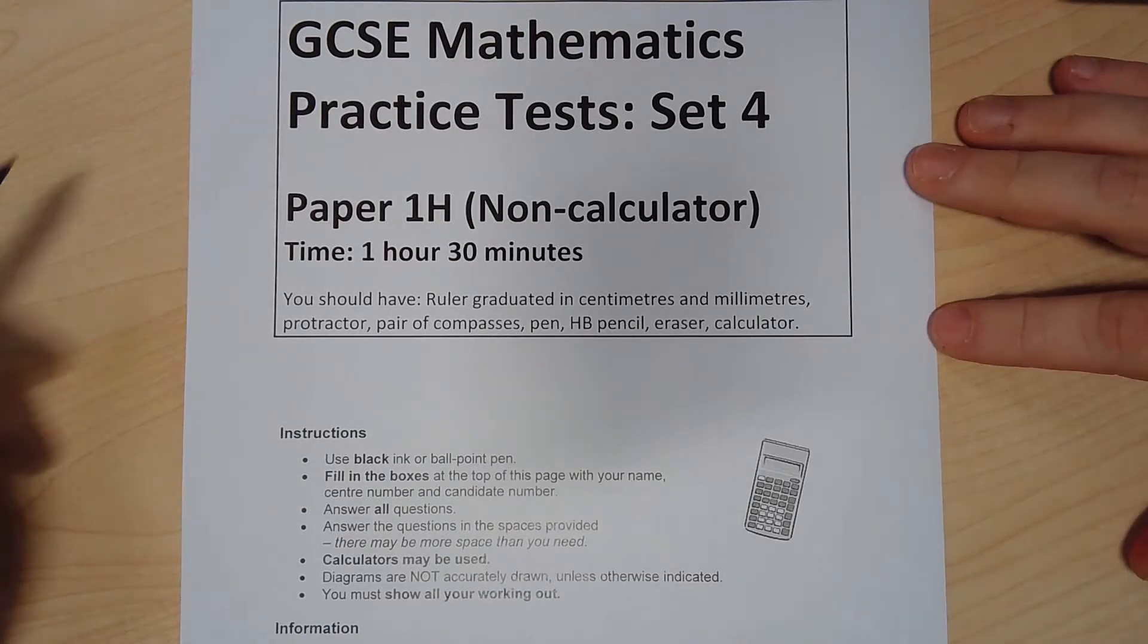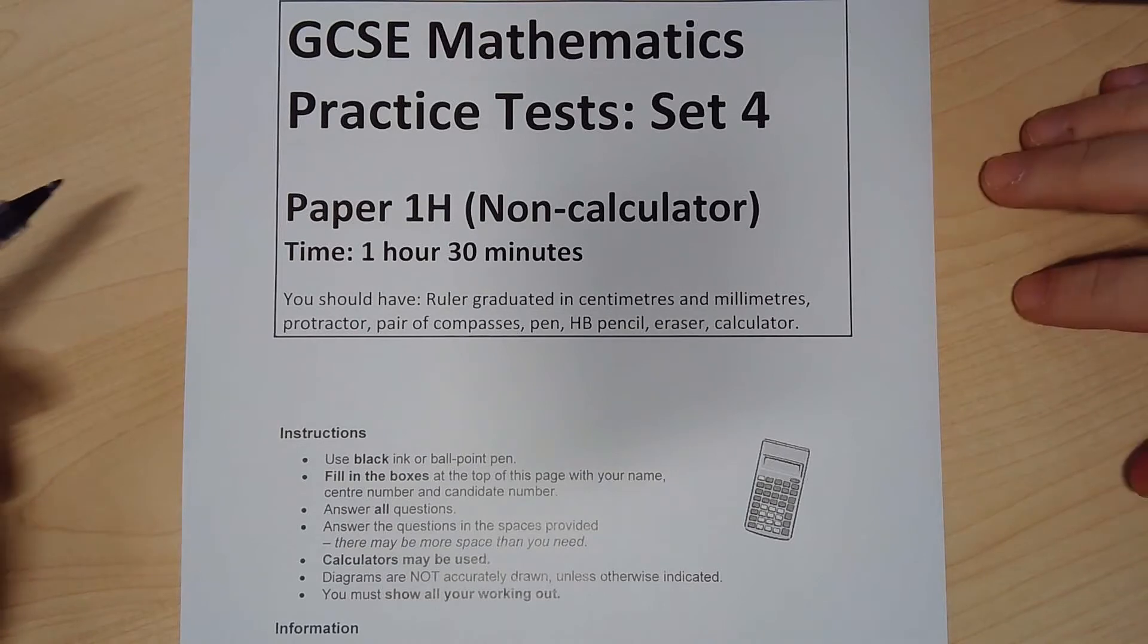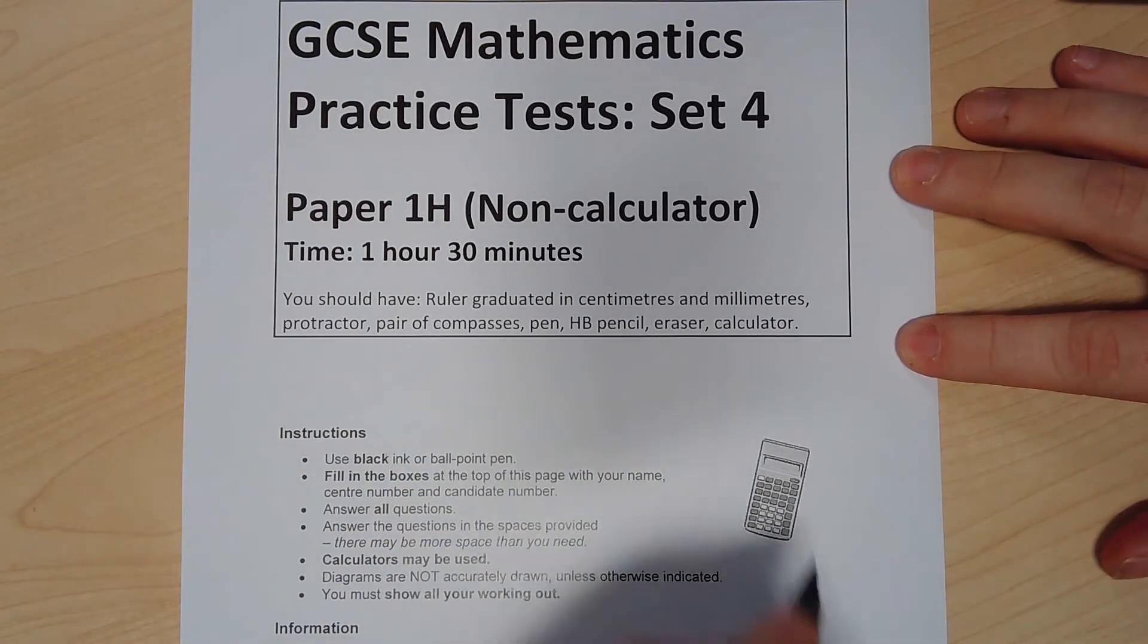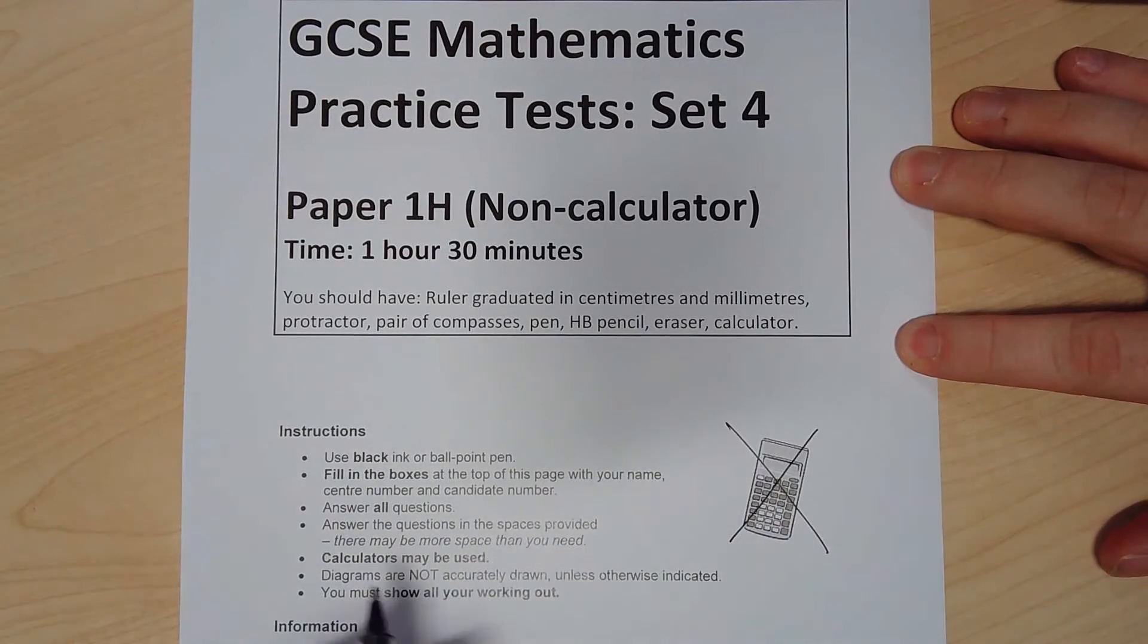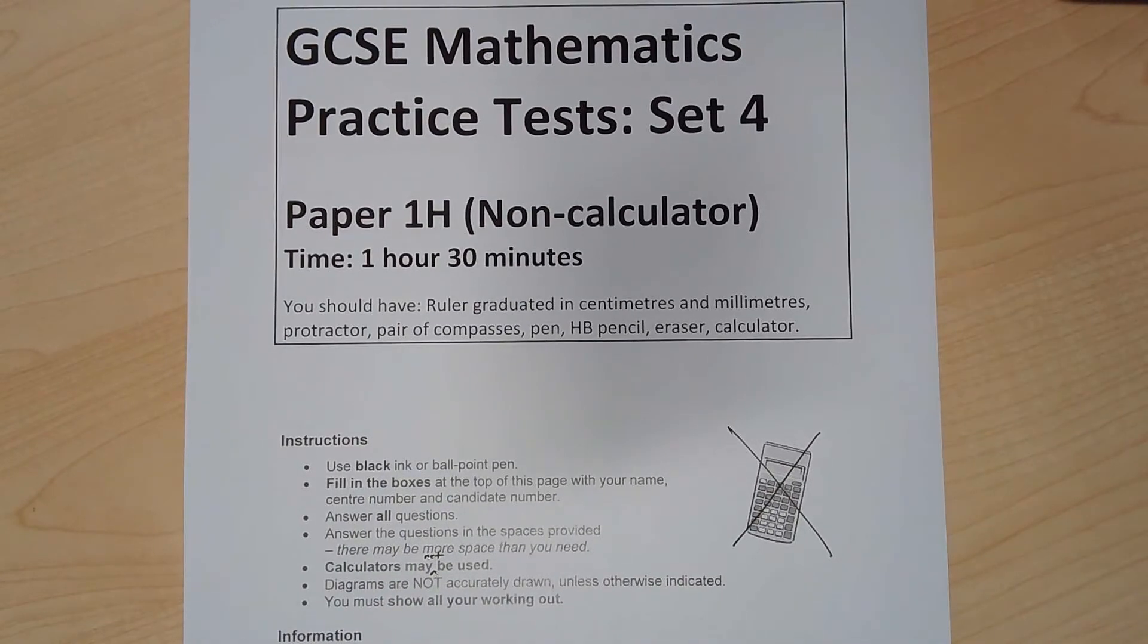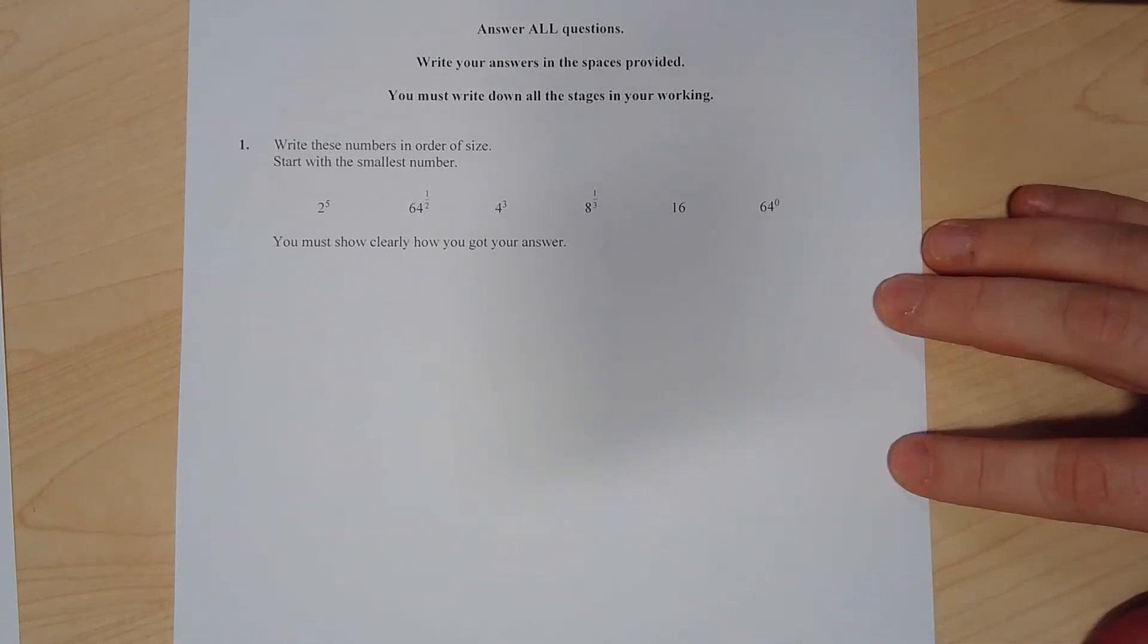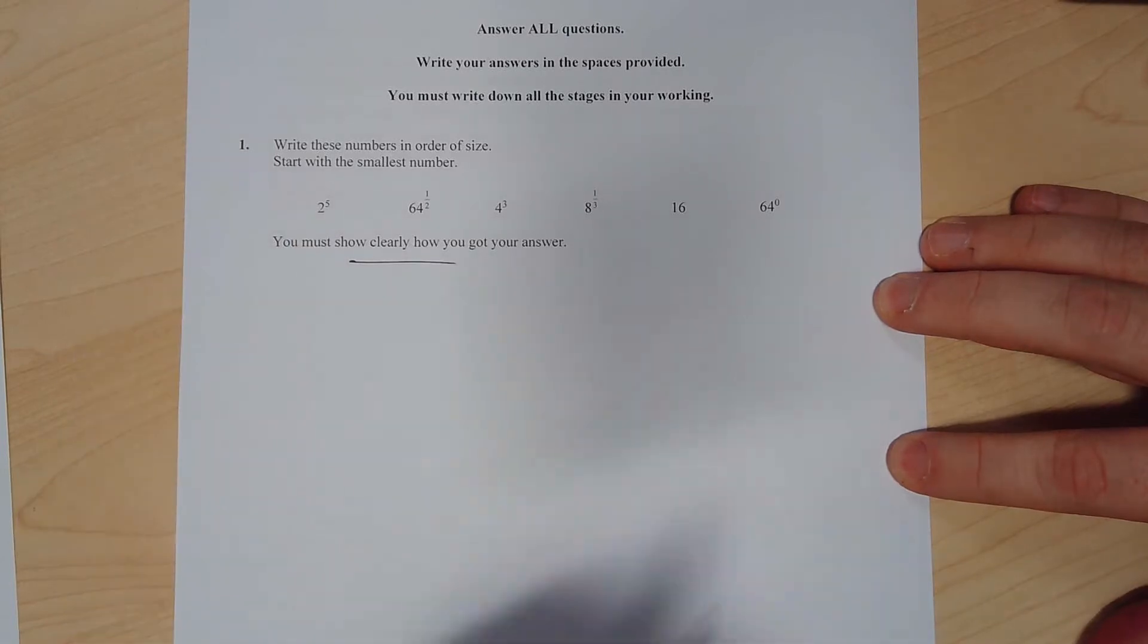This is a GCSE practice test for Paper 1H. It is a non-calculator paper - there's a slight error here and it does say calculators may not be used. Question number one: write down these numbers in order of size, start with your smallest number. You've got to show clearly how you've got your answer, so you just need to write down what the value of each of these numbers are.